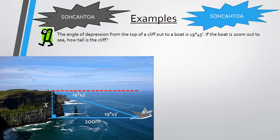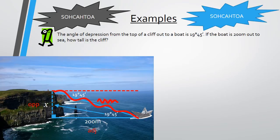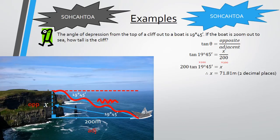Our next step is to move the 19 degrees 45 minutes into the elevation position — we know it's the same — so that x and 200 are part of that triangle. Then we follow our steps: hypotenuse, opposite, adjacent. Looking at opposite and adjacent, we use tan, substitute our information, and solve the equation. We get 71.81 meters — therefore the cliff is 71.81 meters tall.